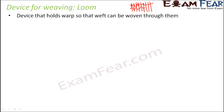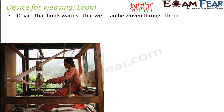This loom can be hand operated or it can be power operated. Here you can see a lady is weaving. The vertical strands are placed in the device, and what she is doing is placing the horizontal strand through them. The warp is already there, and she is weaving the weft through the warp. That is how she gets the fabric.